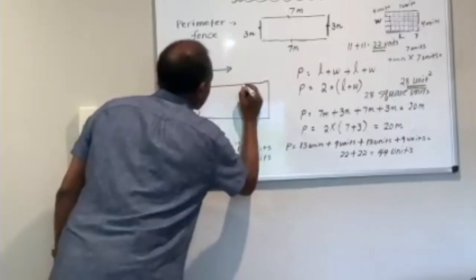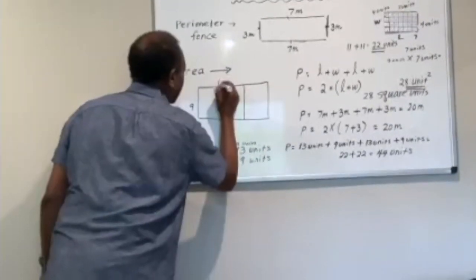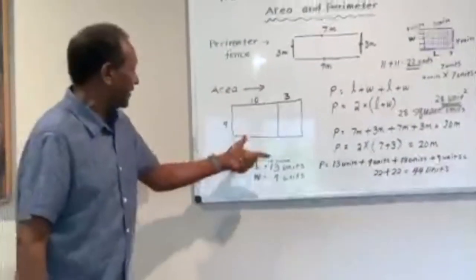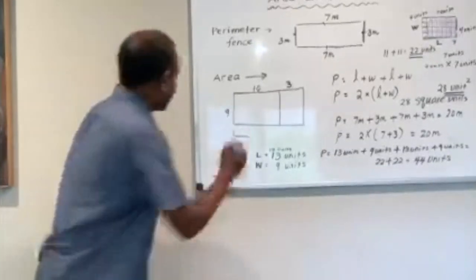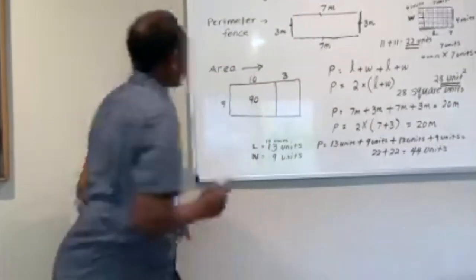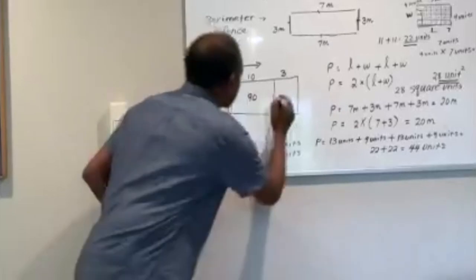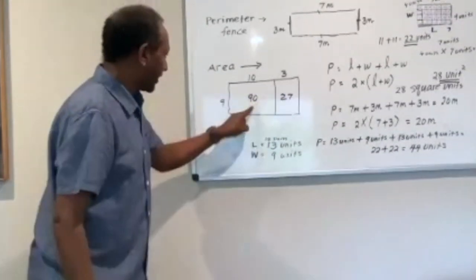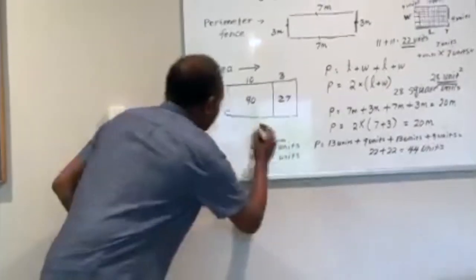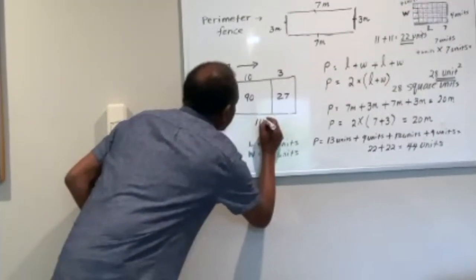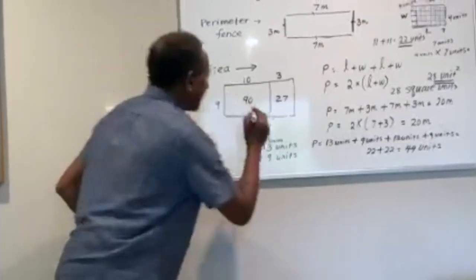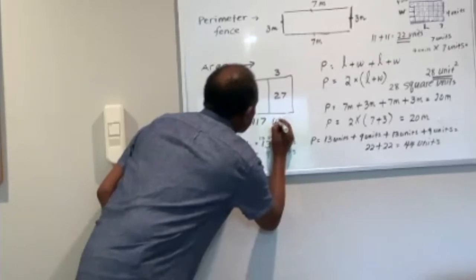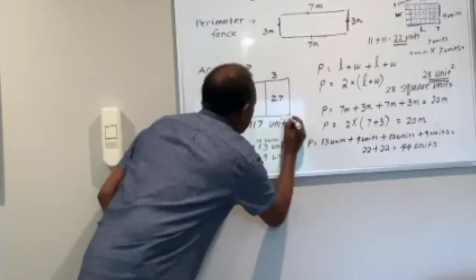9 goes here, but I'm going to break the 13 into 10 and 3 — that way it's much easier. 9 times 10 is 90. 9 times 3 is 27. If I add these two together, that makes 117. So the answer is 117 square units.